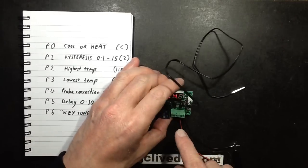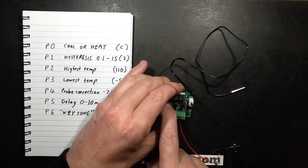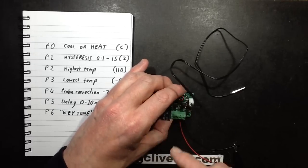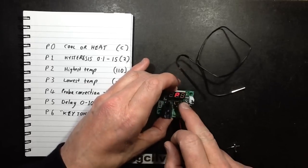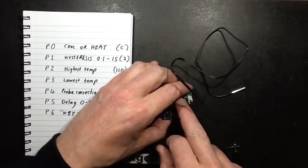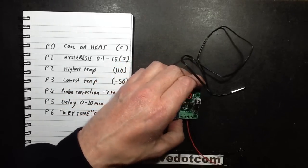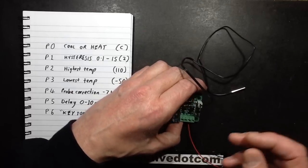The next thing it can program is P1, which is hysteresis. So if I go to P1 and select, at the moment it's 2 degrees centigrade, you can change that. You can change it to anything from about 0.1 to 15 degrees centigrade depending on your application.